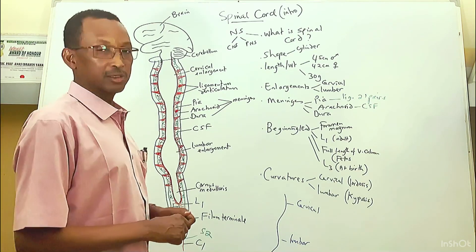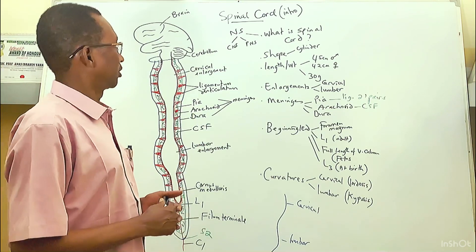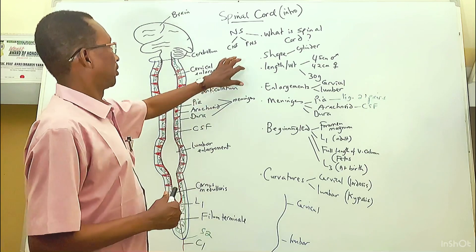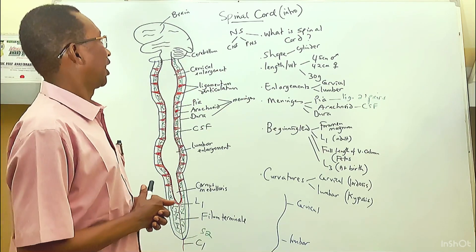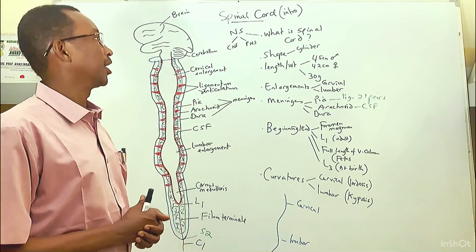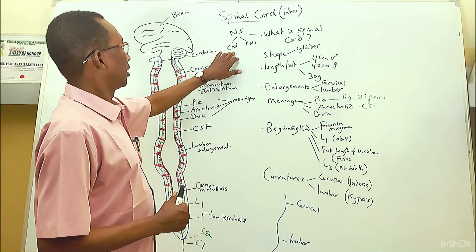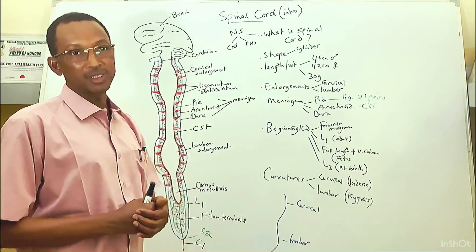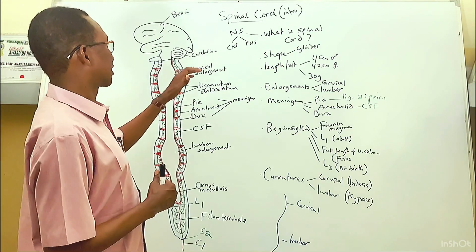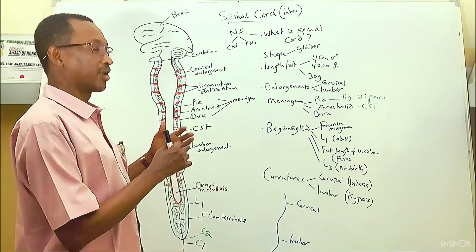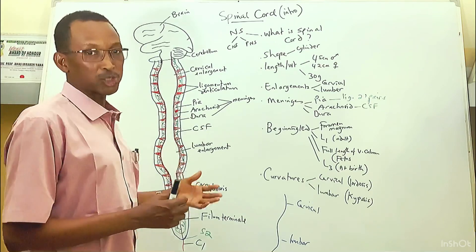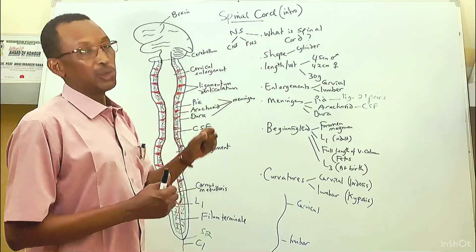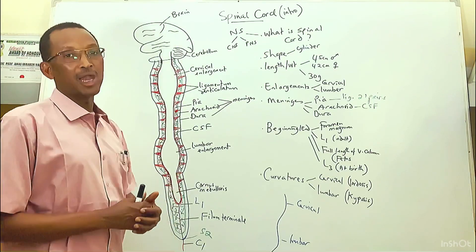Today's discussion is the spinal cord. Physically speaking, the spinal cord is part of the nervous system. The nervous system is divided into the central nervous system and the peripheral nervous system. The central nervous system consists of the brain and the spinal cord. The spinal cord is part of the central nervous system and it connects the brain with the peripheral nervous system, which consists of the spinal nerves as well as the cranial nerves.